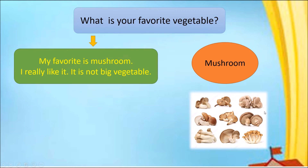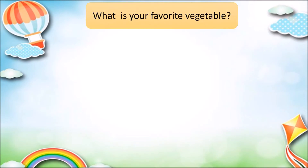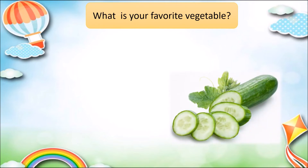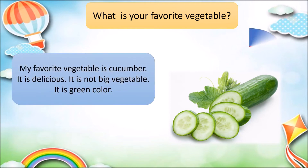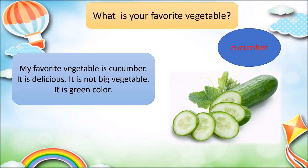So we go to another slide. Same question: What is your favorite vegetable? I have a picture — what do you see? What color is it? What color of vegetable? So I have the answer: My favorite vegetable is cucumber. It is delicious. It is not a big vegetable. It is green color.